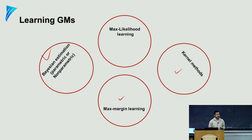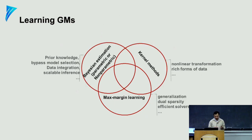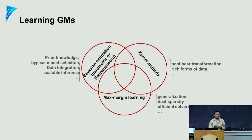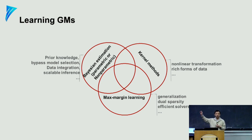There are many more frameworks to learn graphical models, and each of them gives some complementary advantages. In the Bayesian framework you have prior knowledge, you can bypass model selection because you can do model averaging. In the kernel framework you get nonlinearity, and in SVM you have dual sparsity. Why dual sparsity? Because in SVM one of the key ideas is that you have support vectors, which can be used to determine a decision boundary based on a few data points close to the boundary. This makes algorithms more robust and less influenced by outliers.